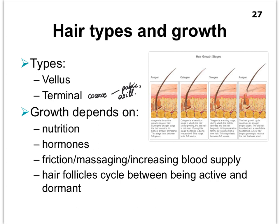Our hair follicles cycle between being active and dormant. When they're dormant, you might look at a slide and find no hair in the hair follicle. Some areas have long cycles and some have short ones — your eyelashes and eyebrows tend to have pretty short cycles, which is why those hairs are short. The hair on your head can grow really long because we have very long growth cycles.